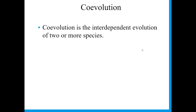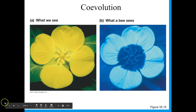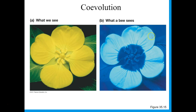Coevolution is the interdependent evolution of two or more species. This is very different from convergent evolution — similar sounding idea, but a different concept. Coevolution would be like these flowers evolving particular colors. This flower looks nice and yellow to you or me, but to bees it looks like there is food. The flower has developed ultraviolet colors that bees can actually identify — an ultraviolet patch saying come here, there is food, please come pollinate me. So flowers have evolved a color pattern that bees can actually see.